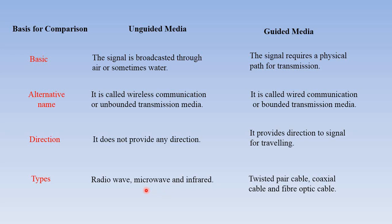Fourth, types. In unguided media the types are radio waves, microwave, and infrared — these are used to transmit data wirelessly. In guided media, different types of cables are used: twisted pair cable, coaxial cable, fiber optic cable, shielded twisted pair cable, and unshielded twisted pair cable.